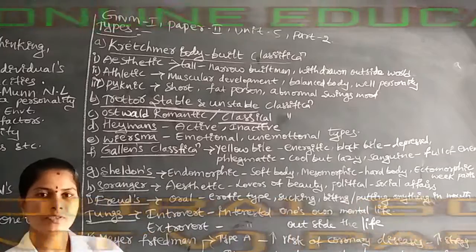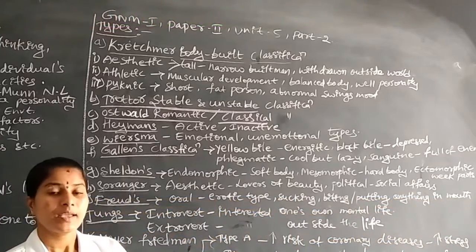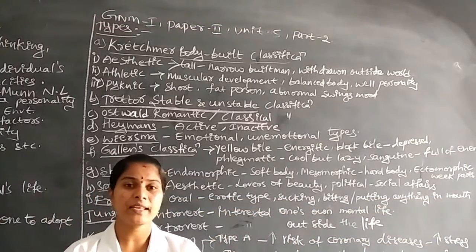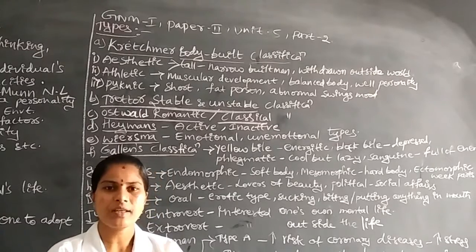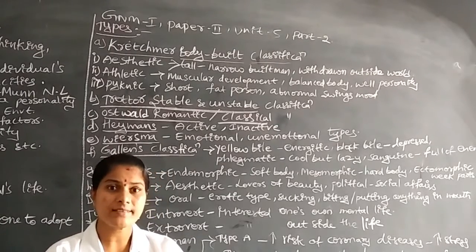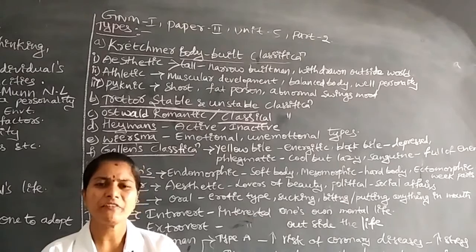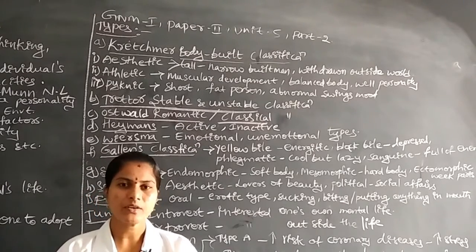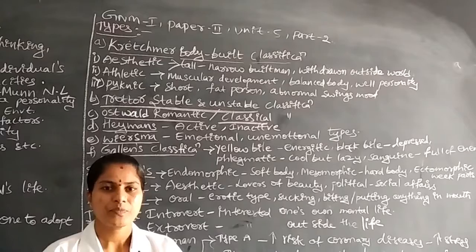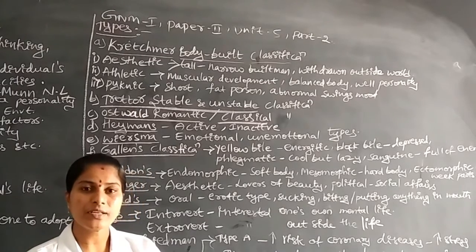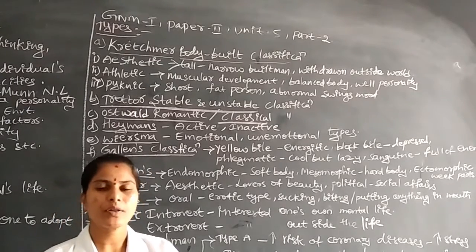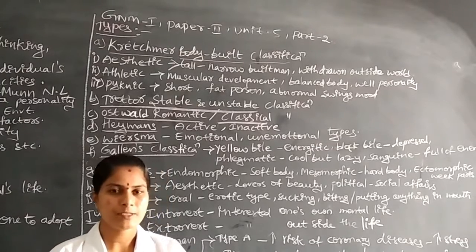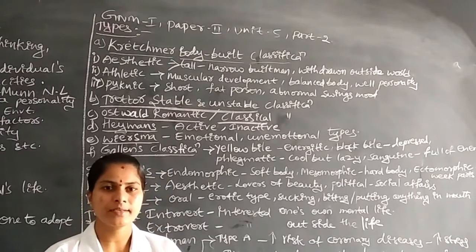In Type B personality, individuals always express their feelings freely — they do not have any depression or stress, and they look very free. They have freedom in their life and are at low risk for coronary heart diseases. These are the classifications under personality.